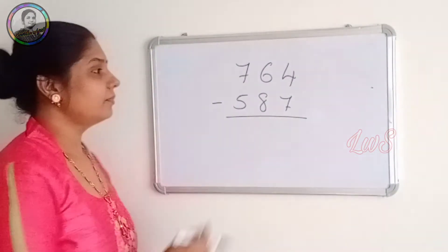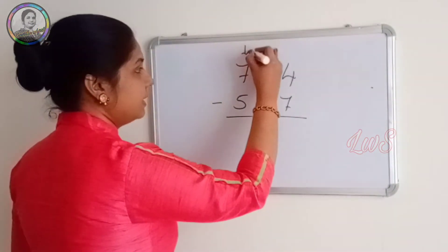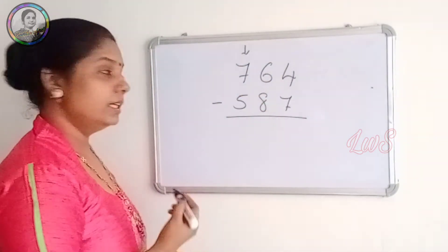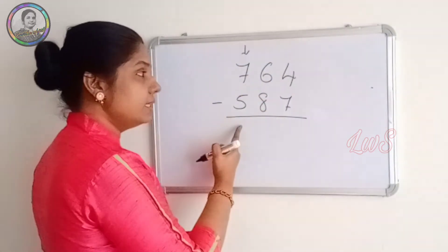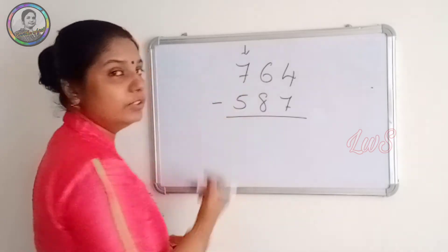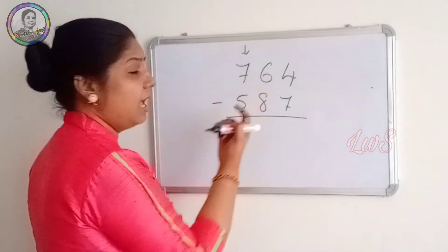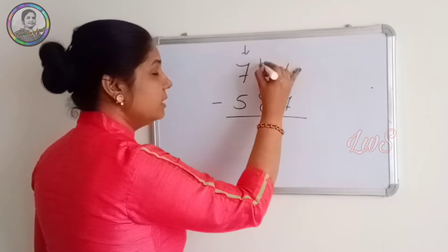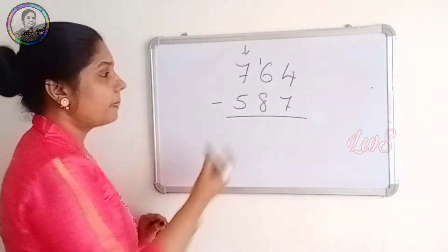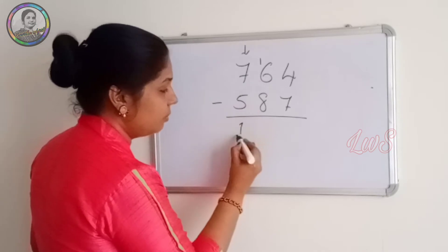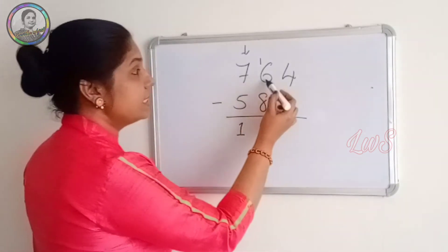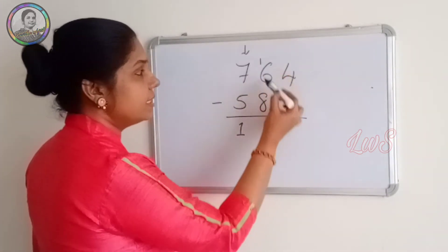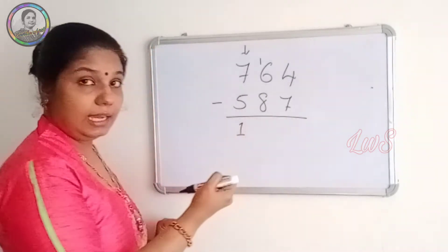Next one. Start from the left hand side. 7 minus 5, it's 2. But before writing 2, just look for the neighbor. It's not having enough. So what we do is we just give a 1 to the 6. So here we have 2 minus 1, 1. And the 6 has become 16. 16 minus 8 is 8.